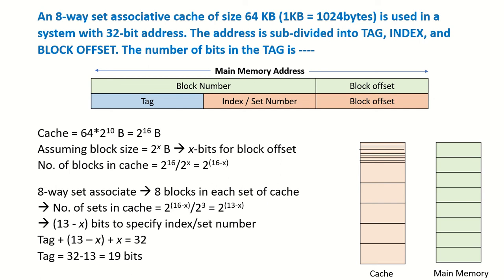An 8-way set associative cache of size 64 KB is used in a system with a 32-bit address. The address is subdivided into tag, index, and block offset. We need to find the number of bits in the tag. Our cache is 64 KB, which is 2 to the power of 16 bytes.